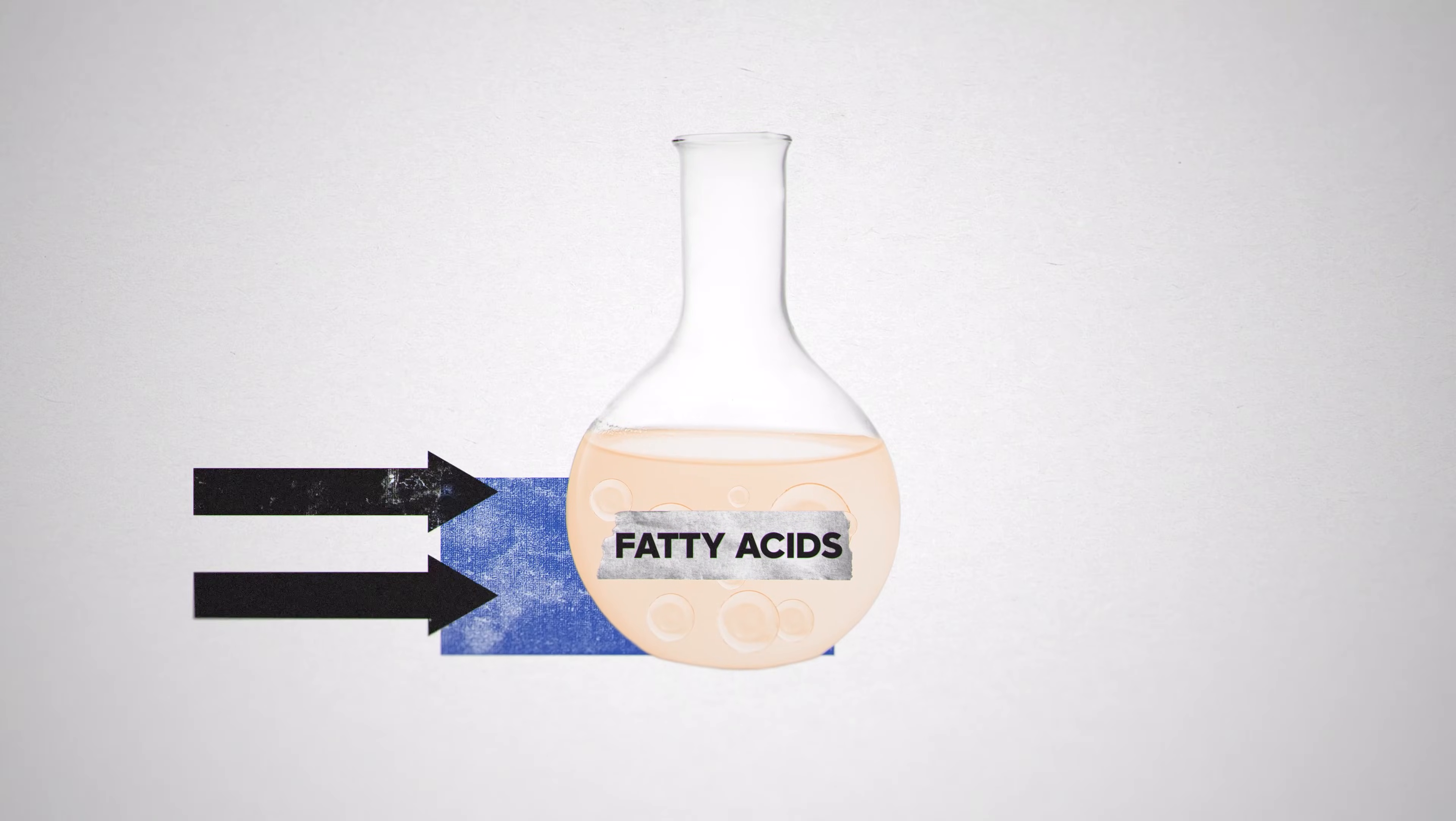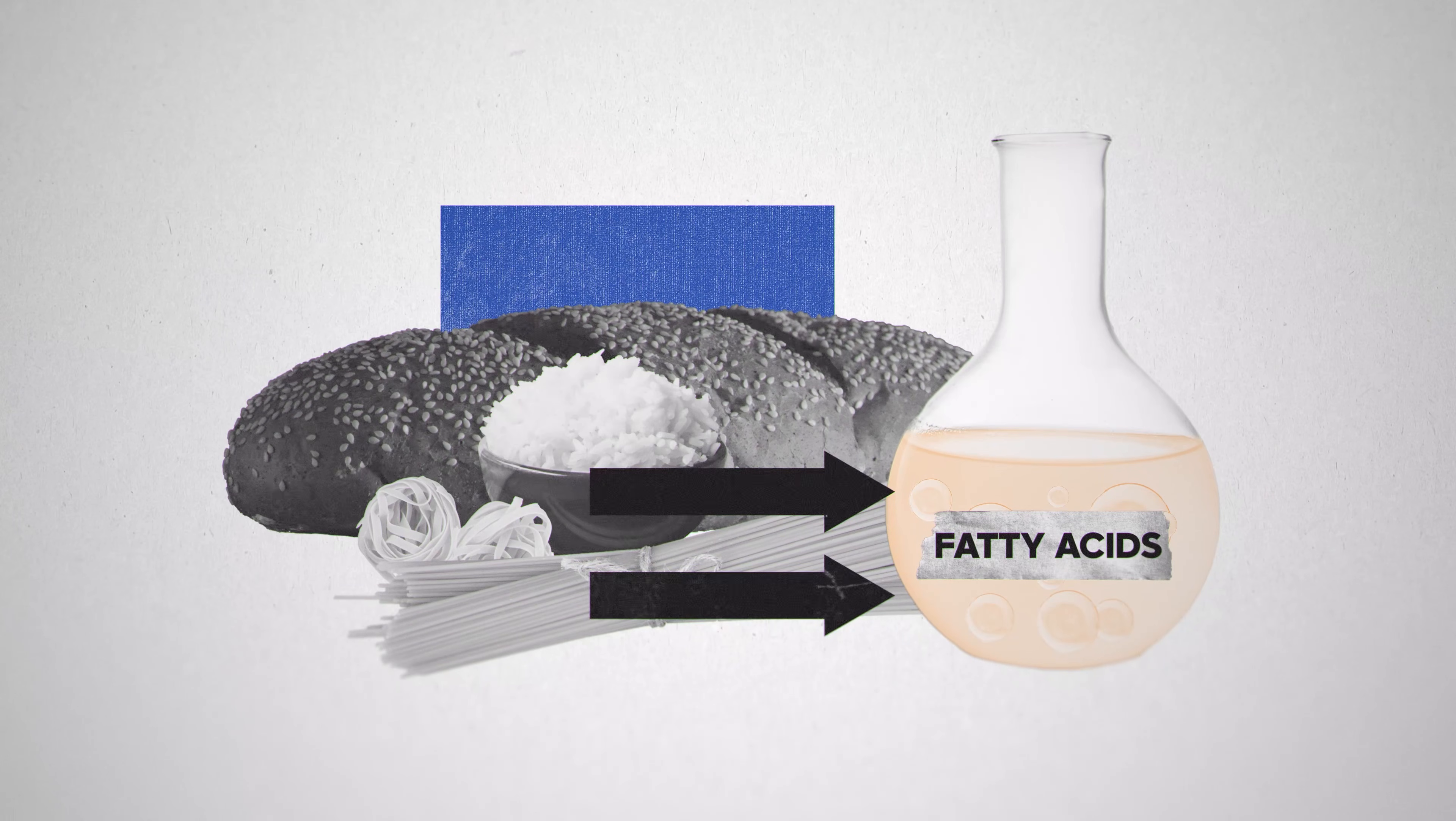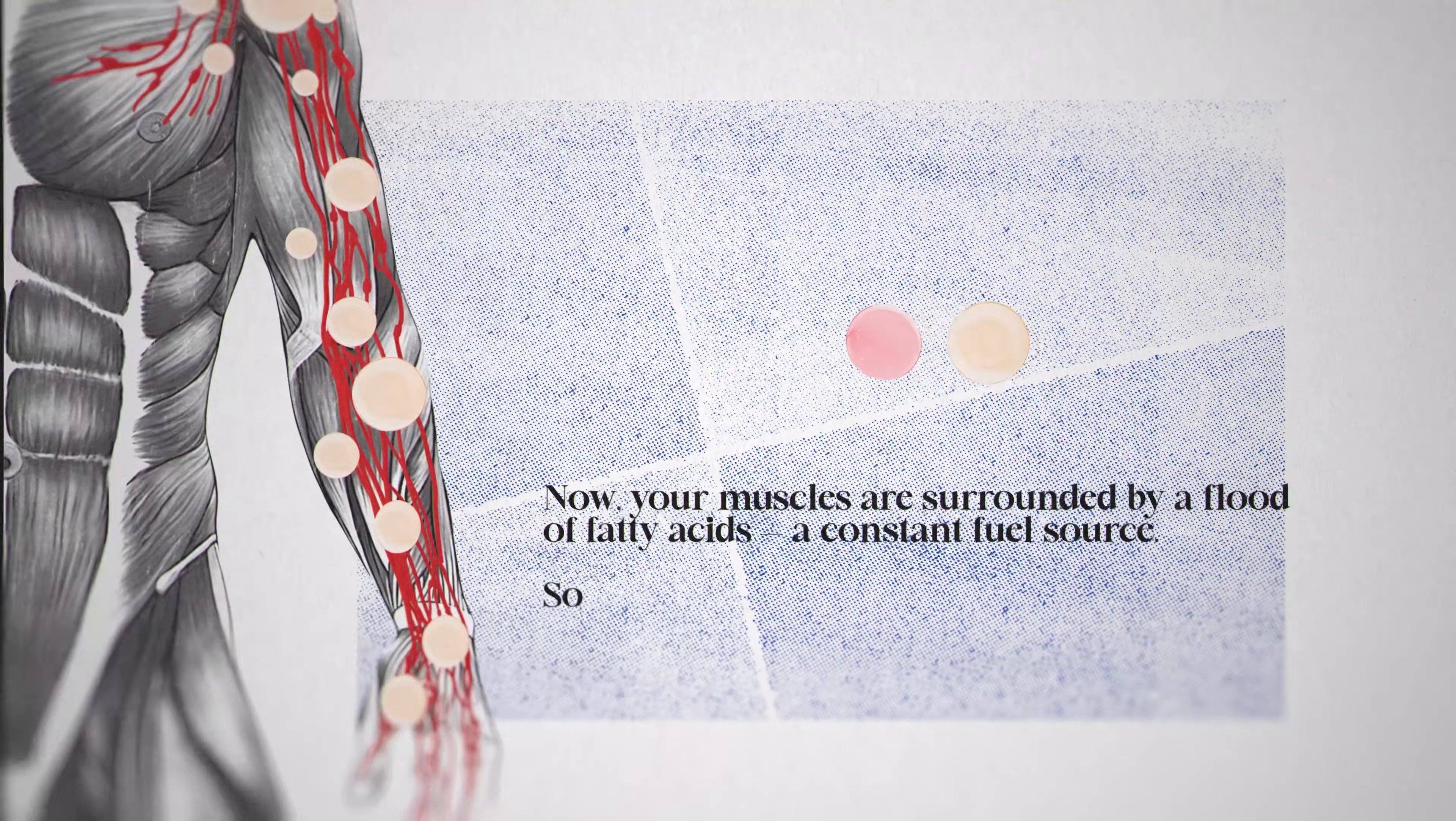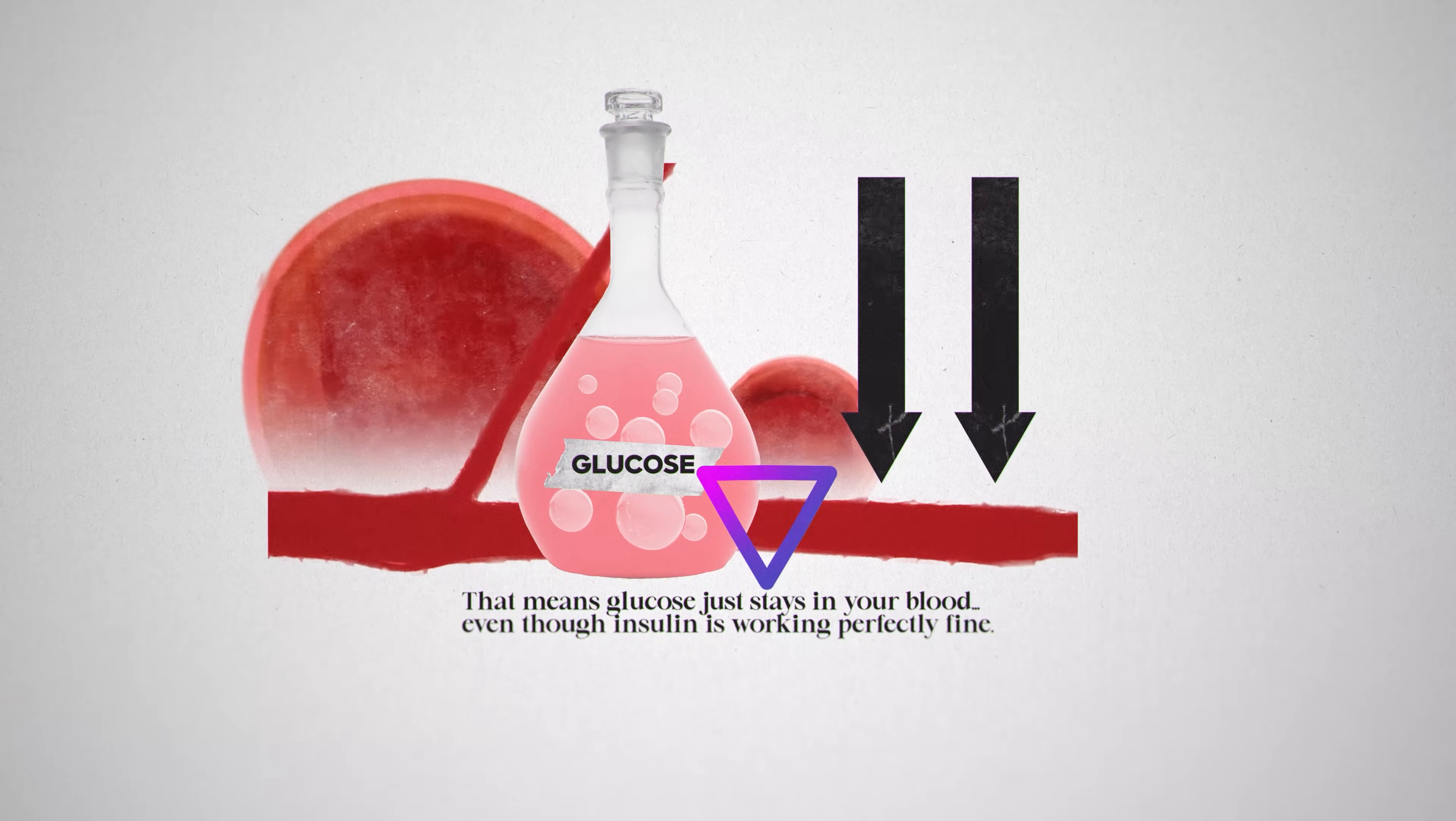But if your fat cells become full, which happens from years of overeating grain-based foods like bread, pasta, and rice, fatty acids begin to spill into your bloodstream. Now your muscles are surrounded by a flood of fatty acids, a constant fuel source. So they prefer to burn fat instead of glucose. That means glucose just stays in your blood, even though insulin is working perfectly fine.